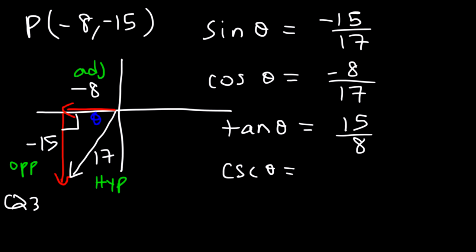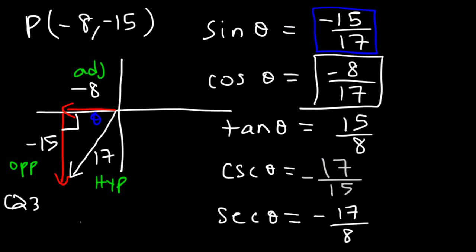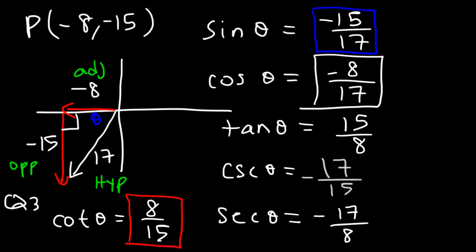To find cosecant, all we need to do is flip sine. So cosecant is negative 17 over 15. Secant is the reciprocal of cosine, so we flip that to get negative 17 over 8. And finally, cotangent, which is 1 over tangent, is 8 over 15. And so that's it for this example.